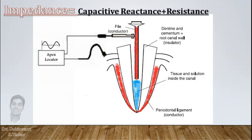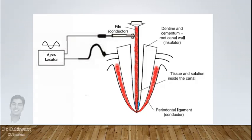Now combination of this reactance and resistance as described before is called impedance. So when file reaches apex, both conductors, i.e., file and periodontal ligament, meet and this impedance value matches with impedance of oral mucosa. At this point apex locator starts beeping.